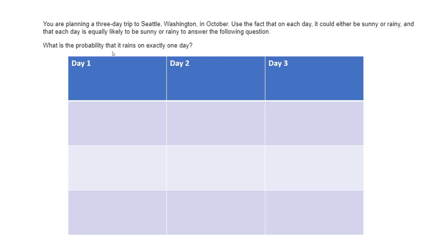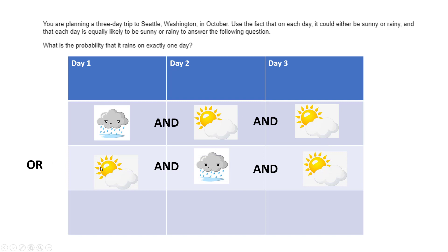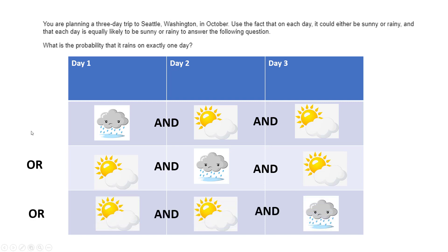Exactly one rainy day would mean it rained on day one and day two and day three were sunny, or it could have rained on day two and day one and day three were sunny, or it could have rained on day three and day one and day two were sunny.